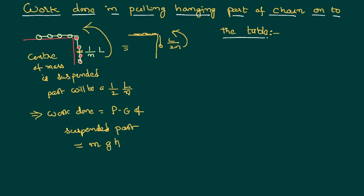Here m is not the mass of the entire chain but the mass of only suspended part. Being a one dimensional body, mass is directly proportional to length. That implies we can write the work done as mass of the suspended part where 1/n of the chain is suspended.